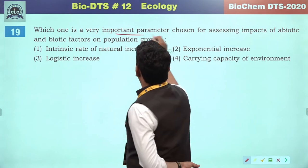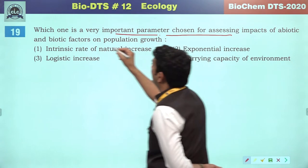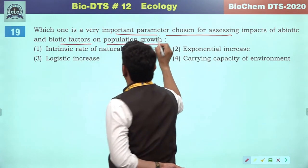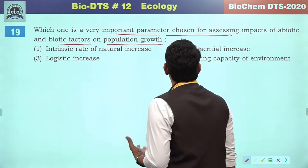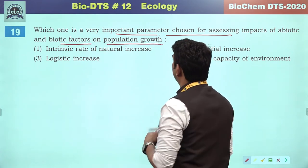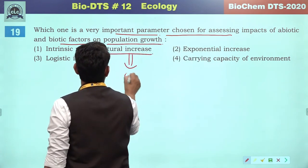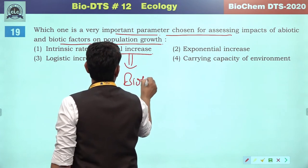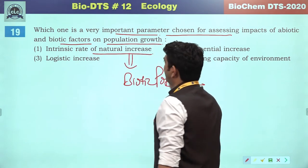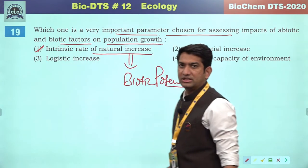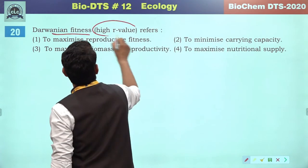Which one is the most important parameter chosen to assess the impact of abiotic and biotic factors on population growth? The biotic potential will be the most appropriate measure to assess this impact. So the correct answer will be the first option.